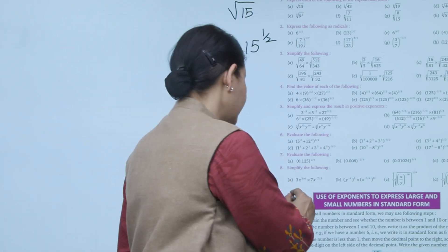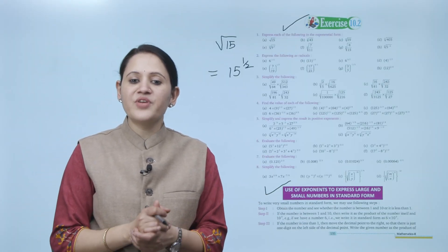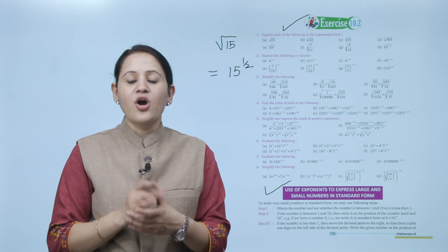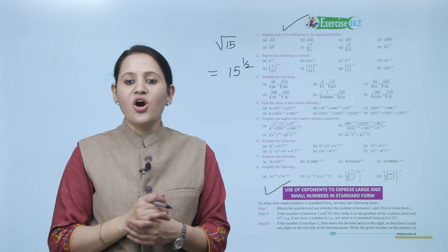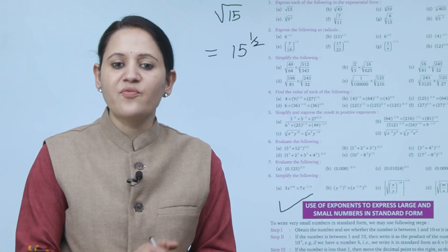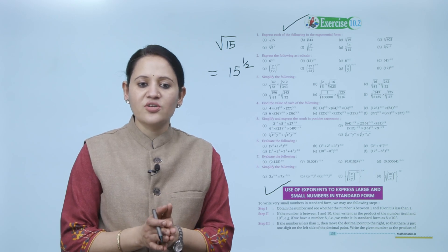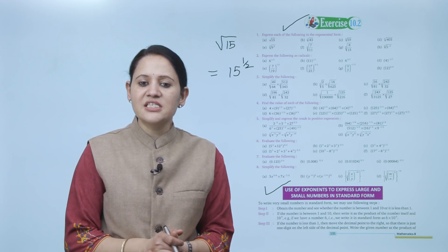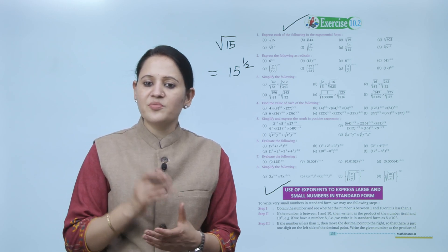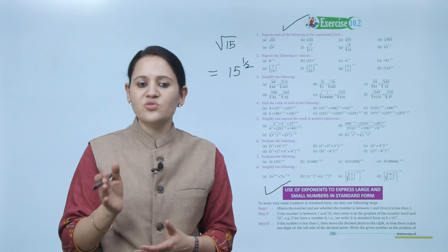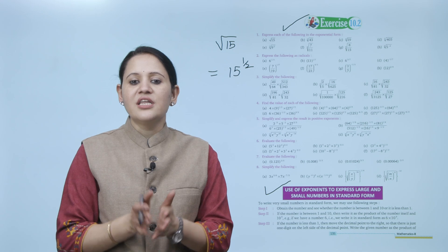Next is the use of exponents to express large and small numbers in standard form. To write a very small number in standard form, follow these steps. Step 1: obtain the number and see whether it is between 1 and 10 or less than 1. If the number is between 1 and 10, write it as the product of the number itself and 10 to the power 0. For example, the number 6 in standard form is 6 × 10^0, and since 10^0 = 1, this equals 6.